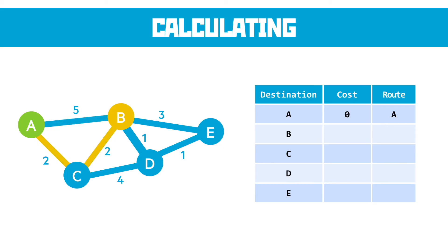There are other routes — from A to C to D to B, or A to C to D to E to B — but those have larger costs. The idea is to brute force your way through the various nodes and transmission paths to find the shortest cost from A to each node. So to get from A to B, the shortest path is through C at a cost of 4. For C, the shortest route is the direct A to C path at a cost of 2. For D, the shortest route comes directly through B giving a total cost of 5. And the shortest way to get to E is directly from D, giving a total cost of 6.